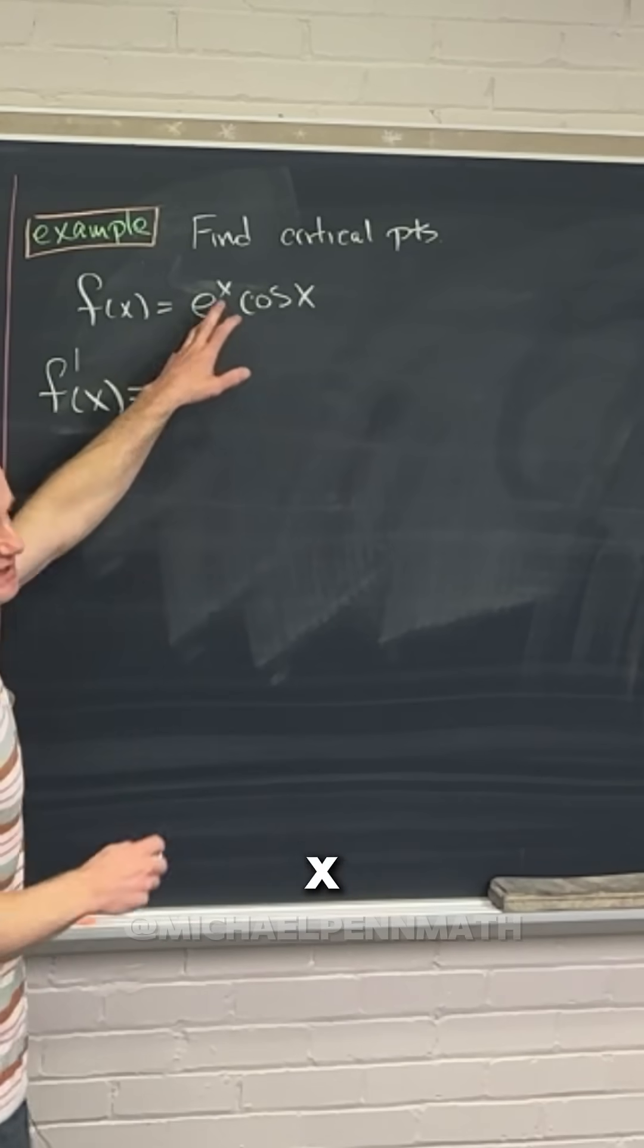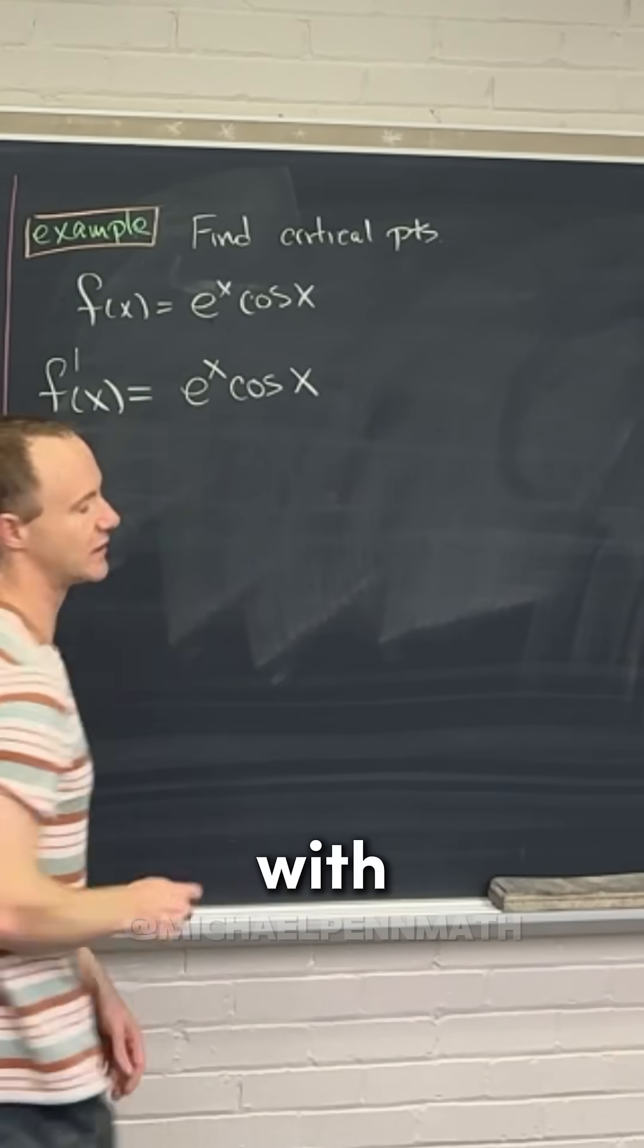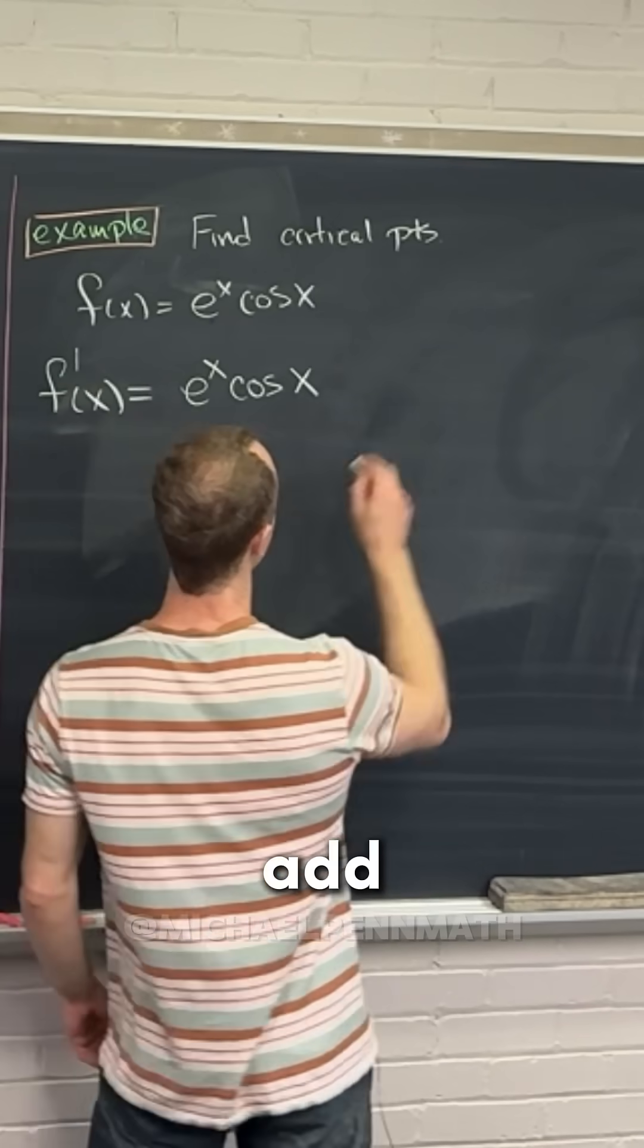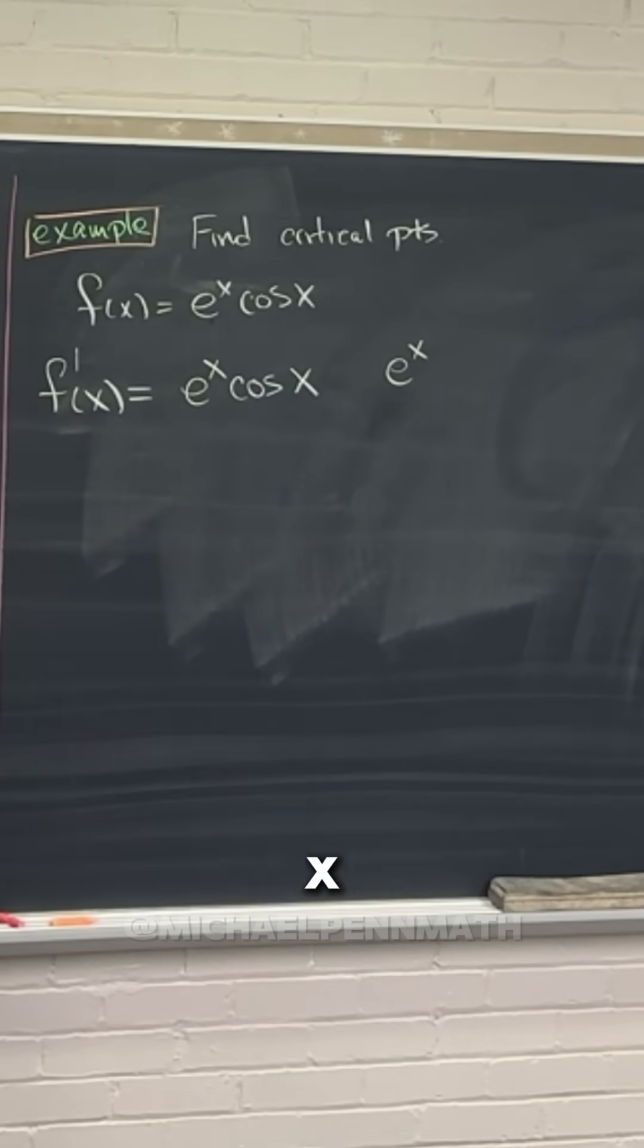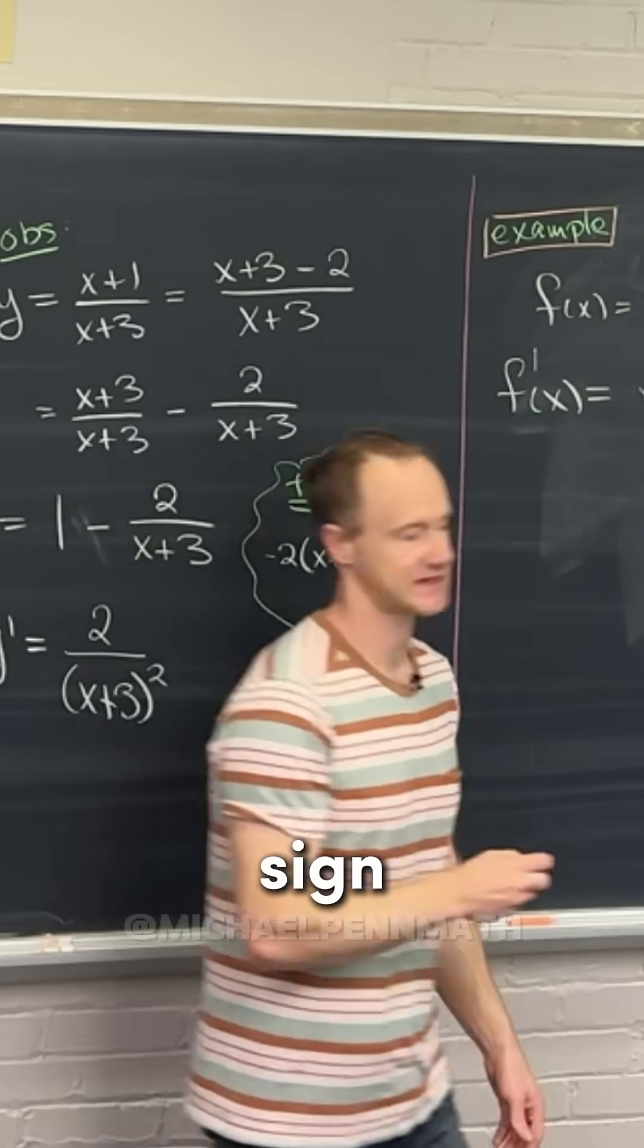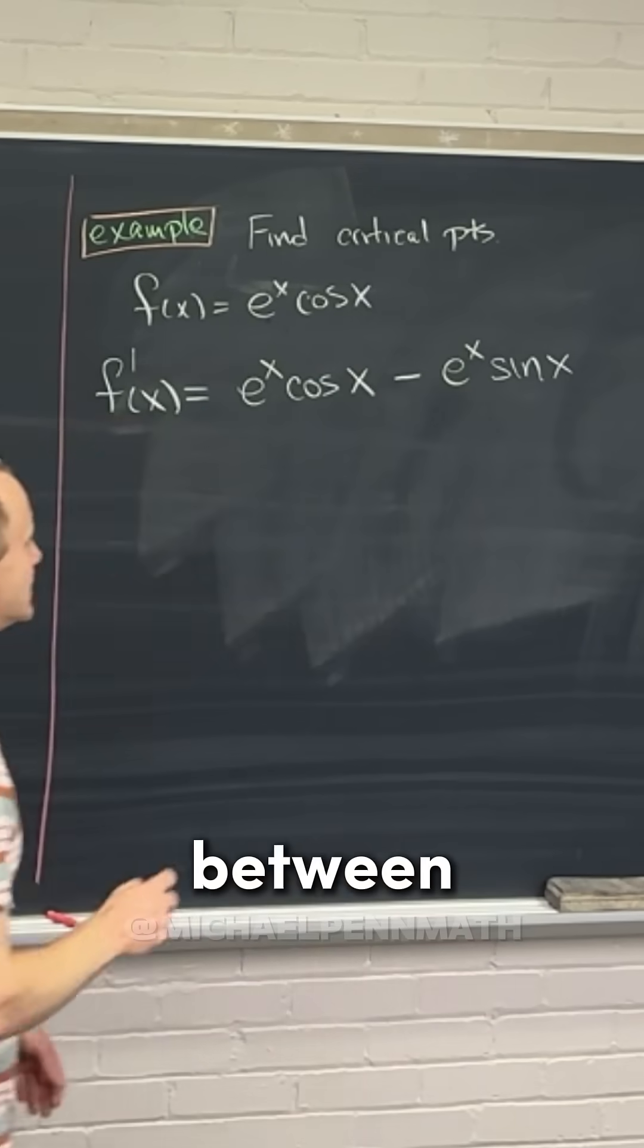So we'll take the derivative of e to the x, which is e to the x, times cosine of x with no derivative. And then we're going to add that to e to the x times the derivative of cosine x. Derivative of cosine is negative sine. So we'll have a sine of x here, and then I'll put the minus sine between them.